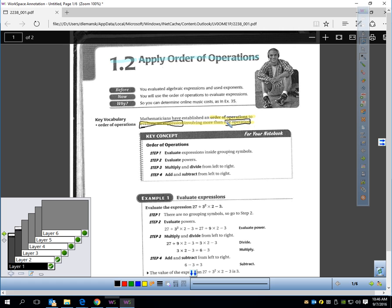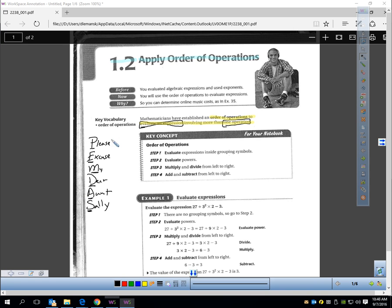Involving more than one operation. In other words, if you have to do more than one addition, subtraction, multiplying, or dividing, you have to do it in the right order. So what is the right order is the next question. You might have heard this before, please excuse my dear Aunt Sally.